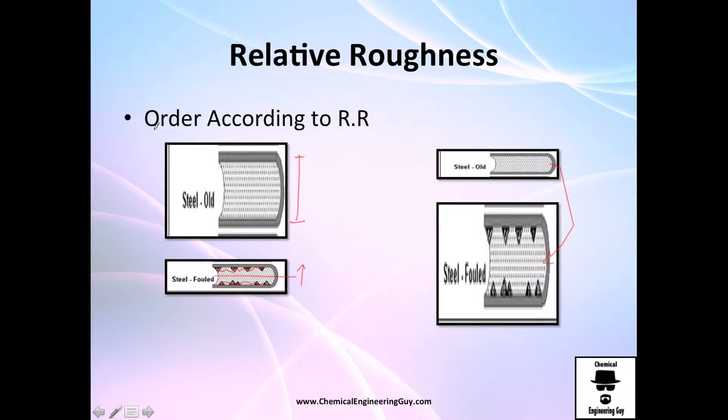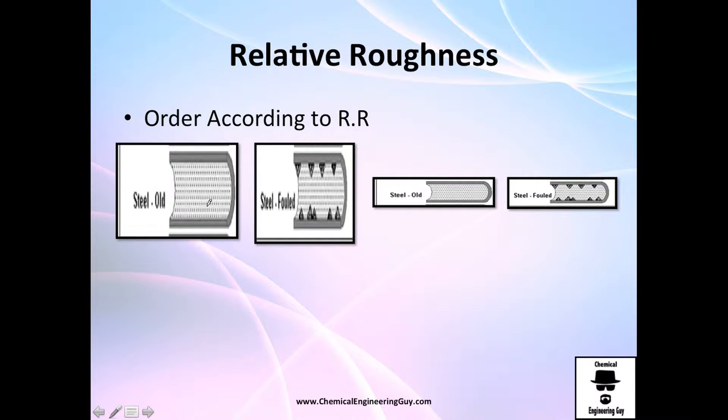So I brought you this exercise to order according to relative roughness. Please try to imagine and do it by yourself. Click pause and do it. The least relative rough will be the one which has a high diameter and low roughness, which is clean. Then the second one will be the one with the same high diameter, but it's a little bit more rough. Then we go to the small ones. Of course, you want to choose the one with less fouling, and the most relative rough will be the one with the diameter very small and roughness high, so the relative roughness will be the maximum.